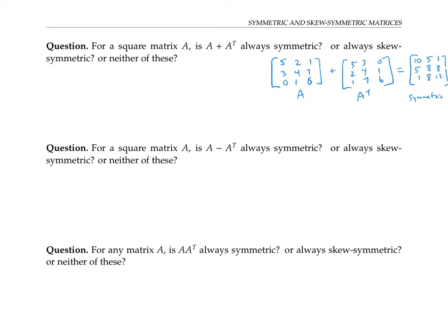And in fact, A plus A transpose will always be symmetric. That's because if we take A plus A transpose and transpose it, using the properties of transpose, this equals A transpose plus A, which is the original matrix. Since the transpose of A plus A transpose equals the original, the matrix is symmetric by definition.